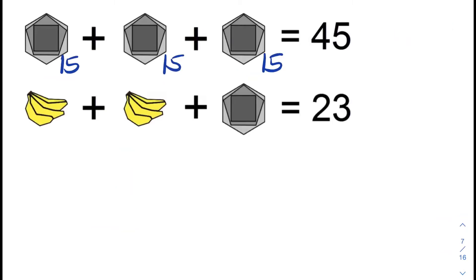For equation 2, we have a bunch of banana plus a bunch of banana plus geometric shape is equal to 23. In the previous equation, we solved that the geometric shape is equal to 15. So to find the value of each bunch of bananas, we need to subtract 15 first to both sides.